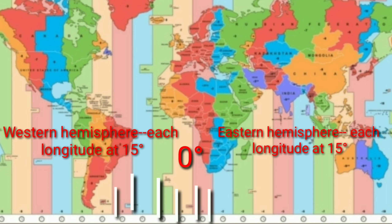If we start from the 0 degree meridian, then in the eastern hemisphere we have 12 time zones at per 15 degrees of longitude, and in the western hemisphere, 12 time zones at per 15 degrees longitude.